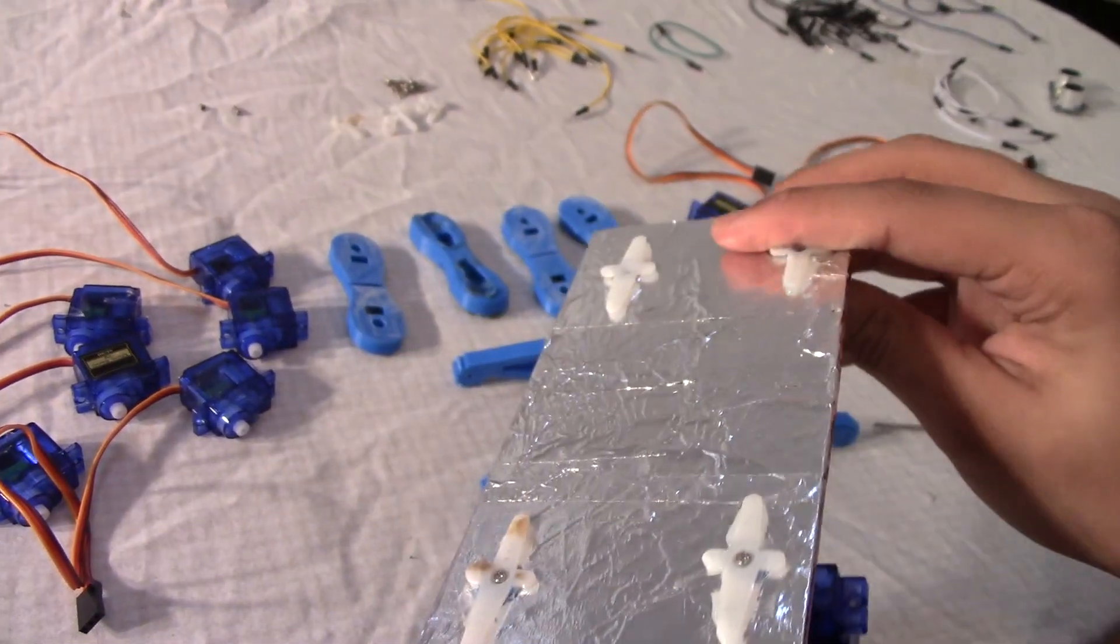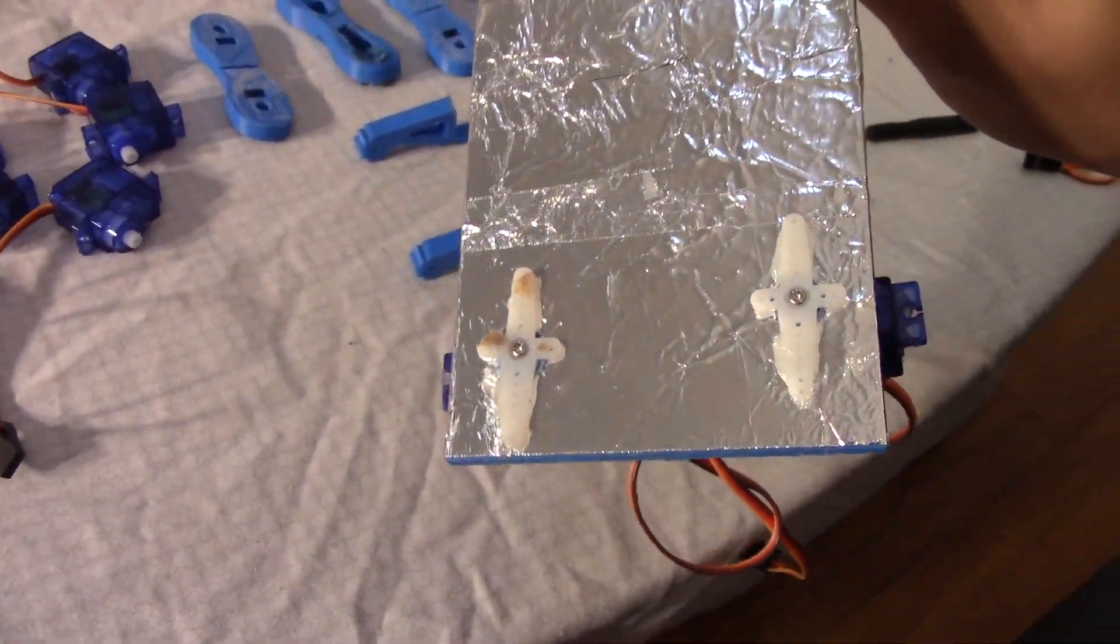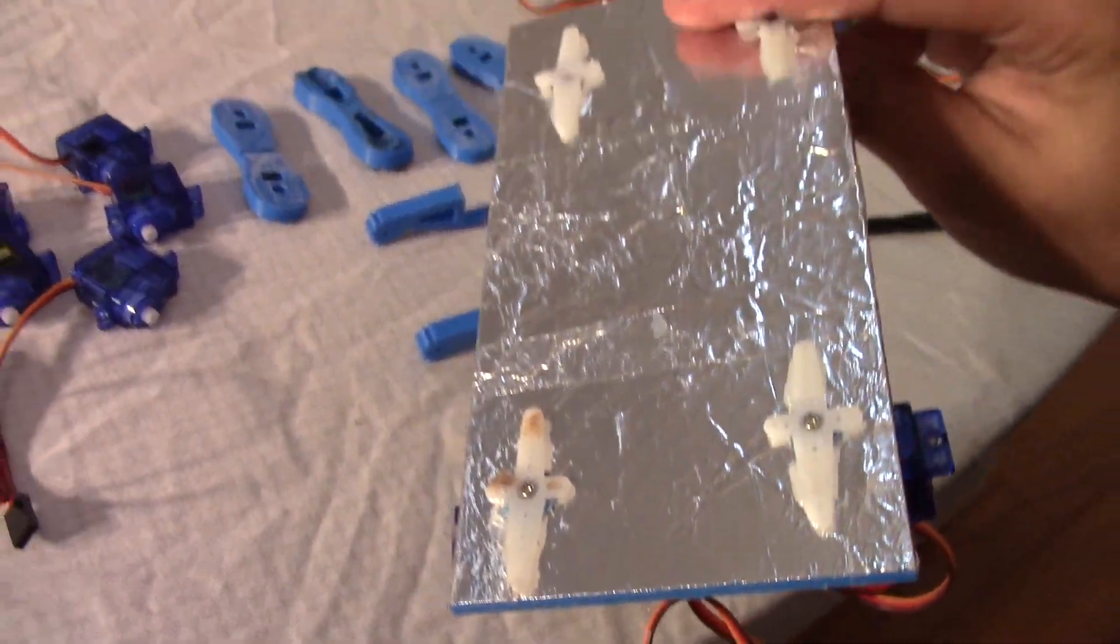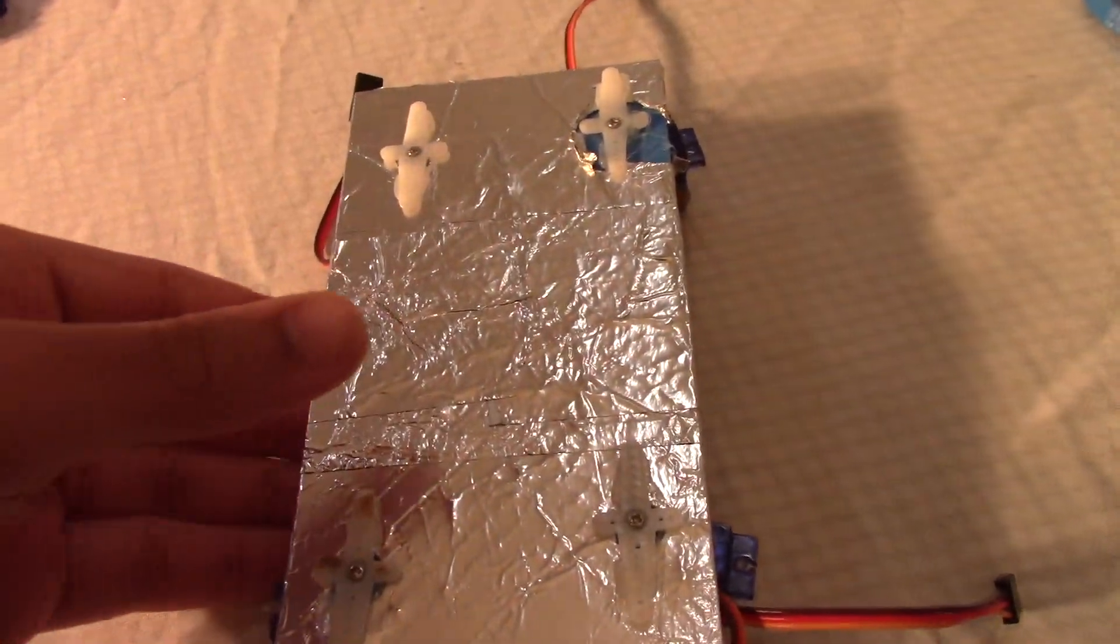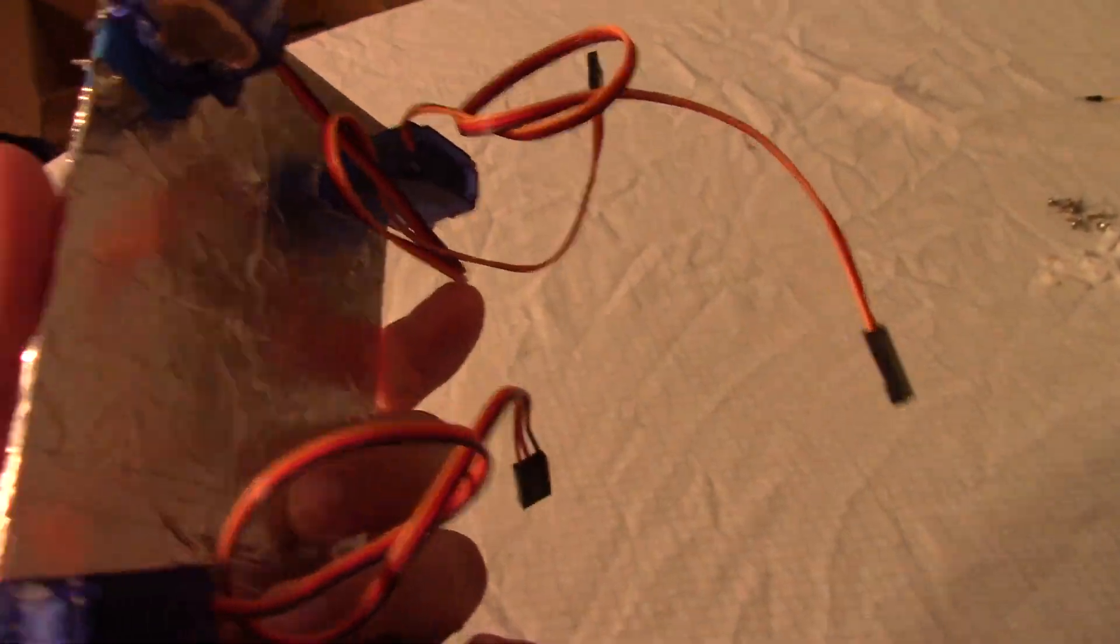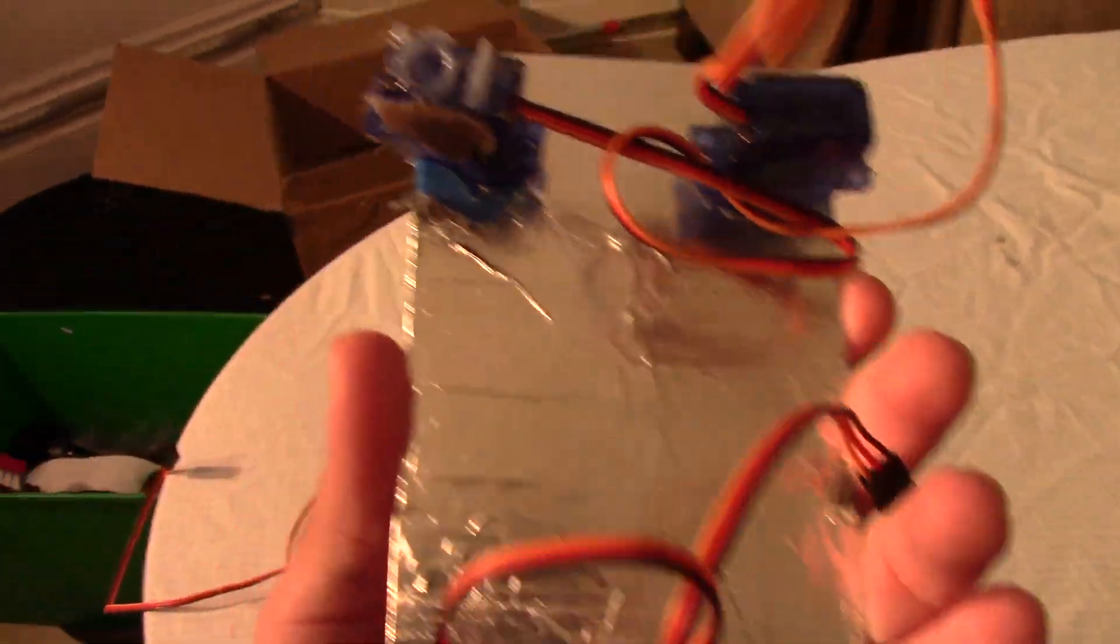So here I've connected the front 2 servos and I screwed them in with the small screws. There's 4 small screws, 1, 2, and 3, and 4 will go over there. Okay so now we have the 4 servos connected on this platform. This is going to be our base for our robot.